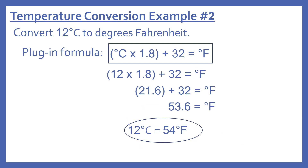Example number two: convert 12 degrees Celsius to degrees Fahrenheit. Using the plug-in formula — the same one since we're finding Fahrenheit again — degrees Celsius times 1.8 plus 32 gives degrees Fahrenheit. We plug in 12 for degrees Celsius, so 12 times 1.8 in parentheses.